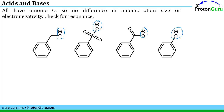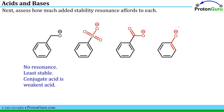Three of these conjugate bases have resonance. A quick way to check is to see if there is a charge on an atom right beside a pi-bonded atom — we can see pi bonds in several of these cases. However, in one species the pi bonds are not present on the atom right next to the charged atom, so there is no resonance. That gives the least stable conjugate base, meaning its conjugate acid is the weakest acid.